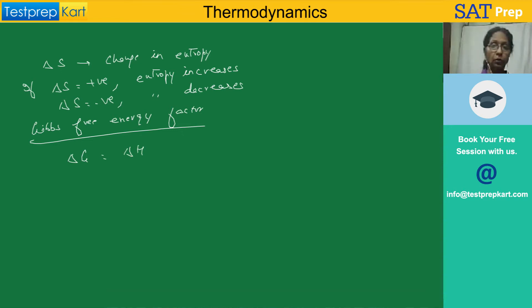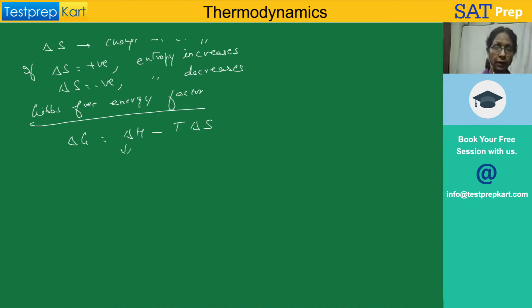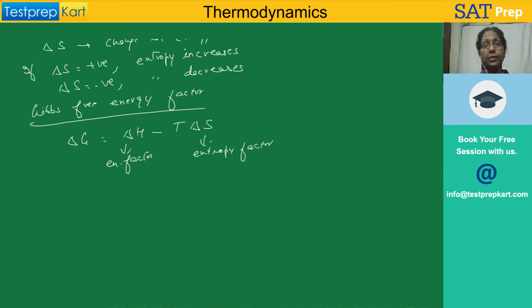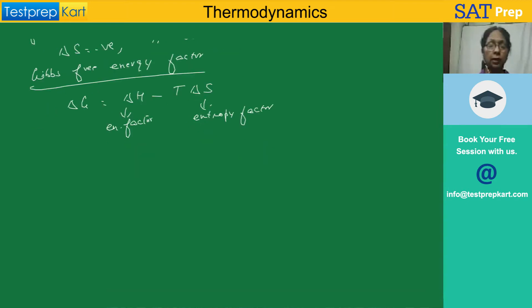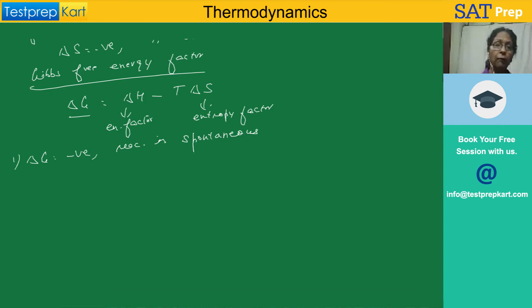So delta G equals delta H minus T delta S. Here delta H represents the energy factor and delta S represents the entropy factor. For a reaction to be spontaneous, the resultant of both these factors is given by delta G. If delta G is negative, then the reaction is spontaneous — it will take place. Delta G must be negative for a spontaneous reaction.